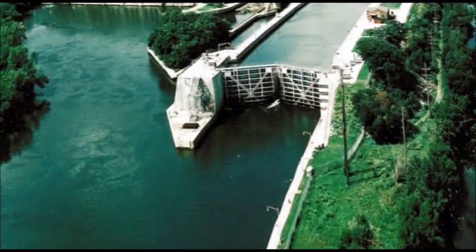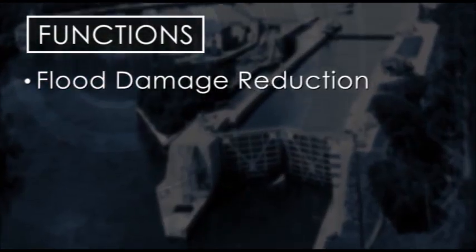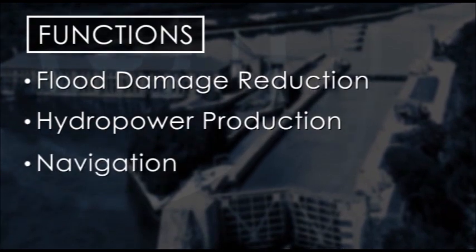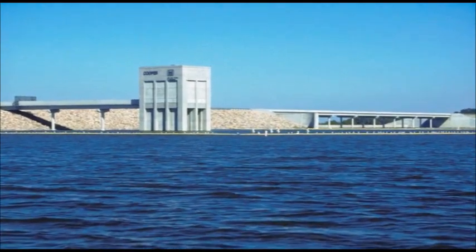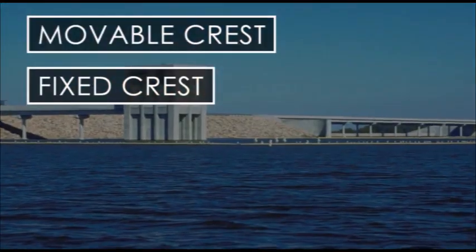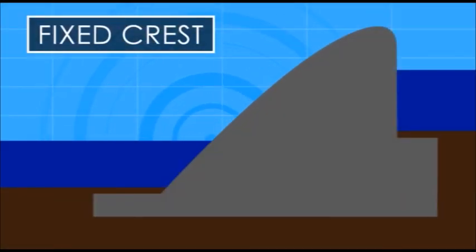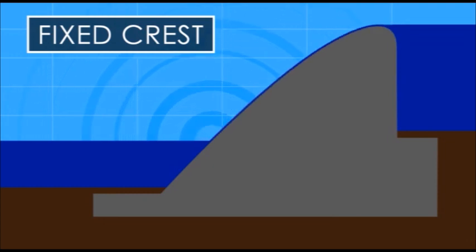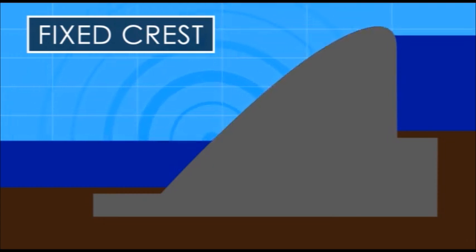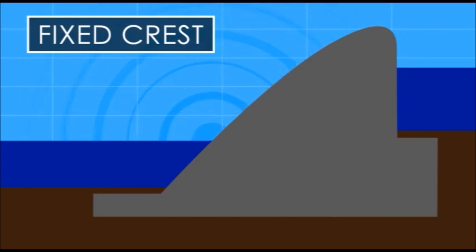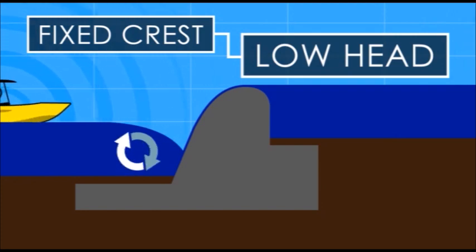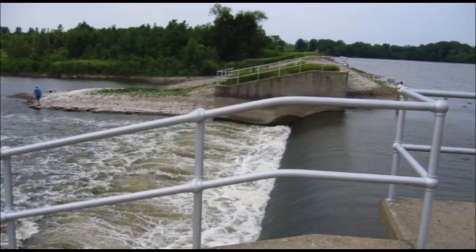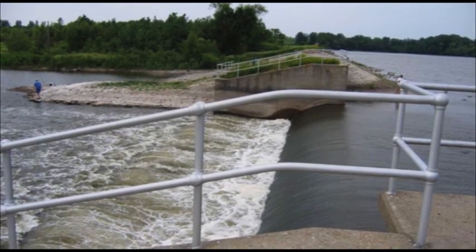Dams serve many purposes. These functions include flood damage reduction, hydropower production, navigation, and water supply. There are two types of dams that can be associated with a lock: a fixed crest and a movable crest. A fixed crest dam is one that does not move. Water often flows over the top of the dam, which keeps the channel deep enough for navigation. A low head dam is a particularly dangerous type of fixed crest dam because the currents below the dam can trap a boat and pull it into the dam. These currents are extremely difficult to see from the upstream side.